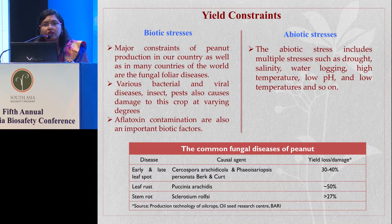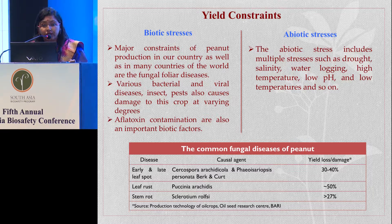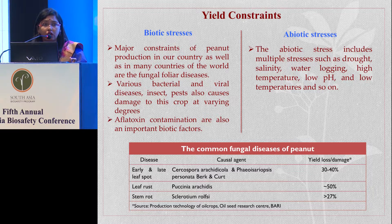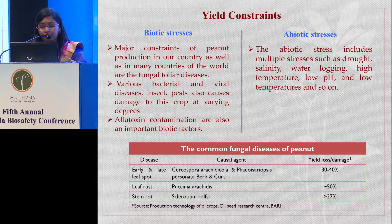This important crop faces several biotic and abiotic stresses — for example, fungal and foliar diseases, viral and bacterial diseases, and insect pests — as well as several abiotic stresses, namely drought, salinity, water logging, high temperature, low pH, and low temperature. Sometimes the devastation is so severe that around 50% yield loss has occurred.